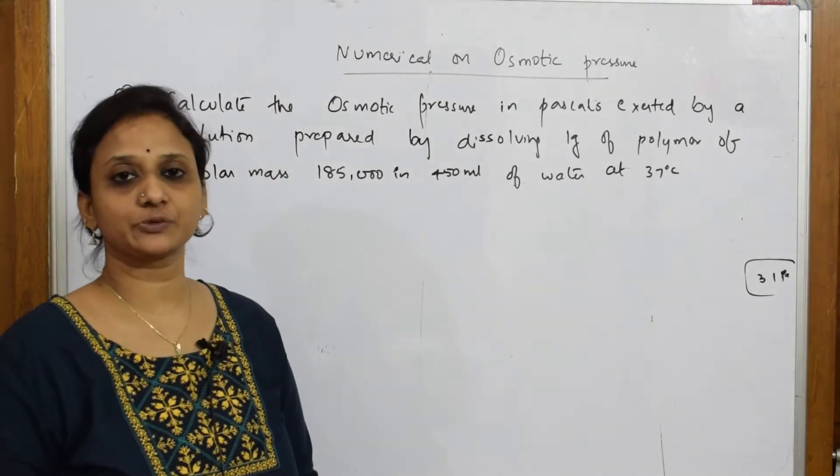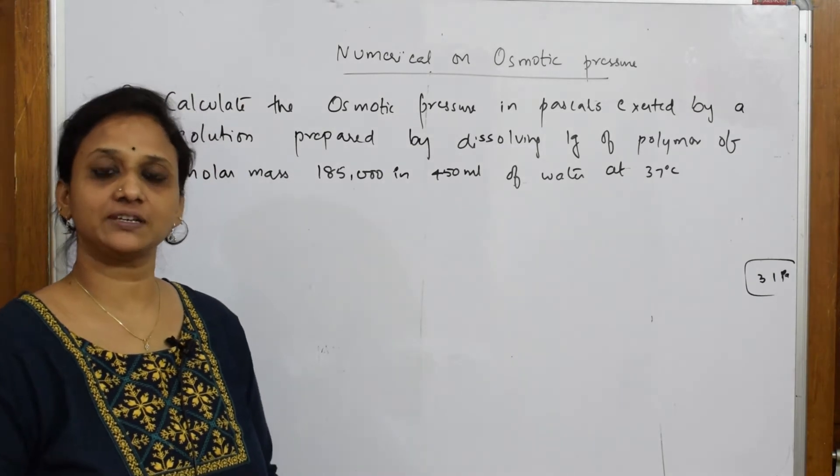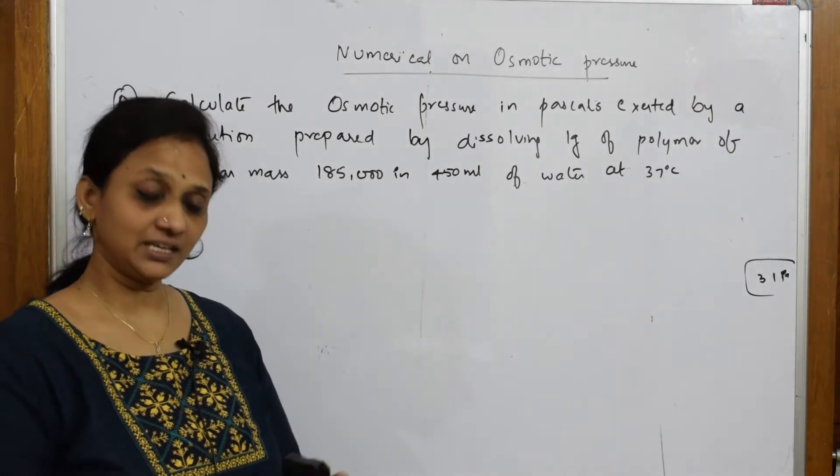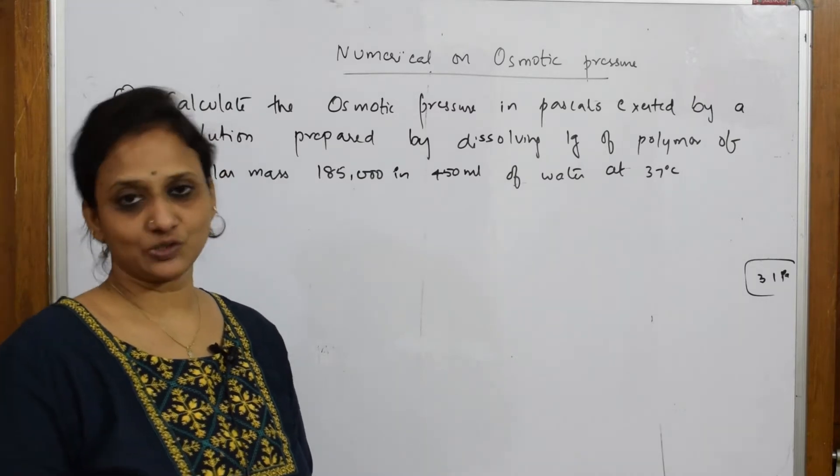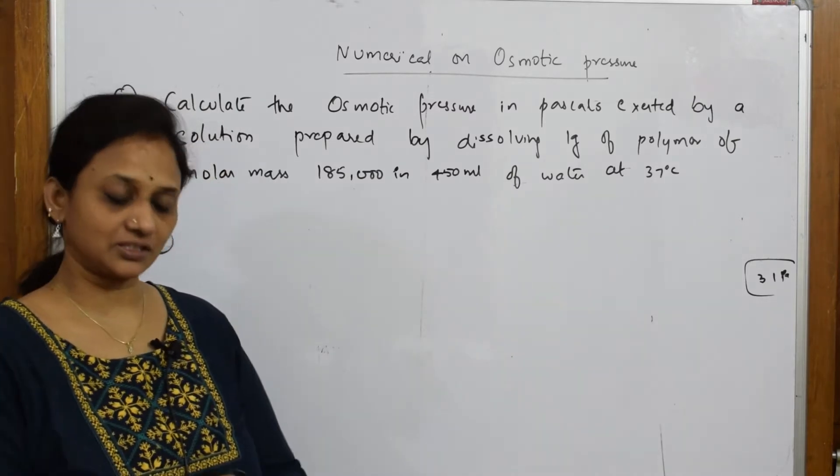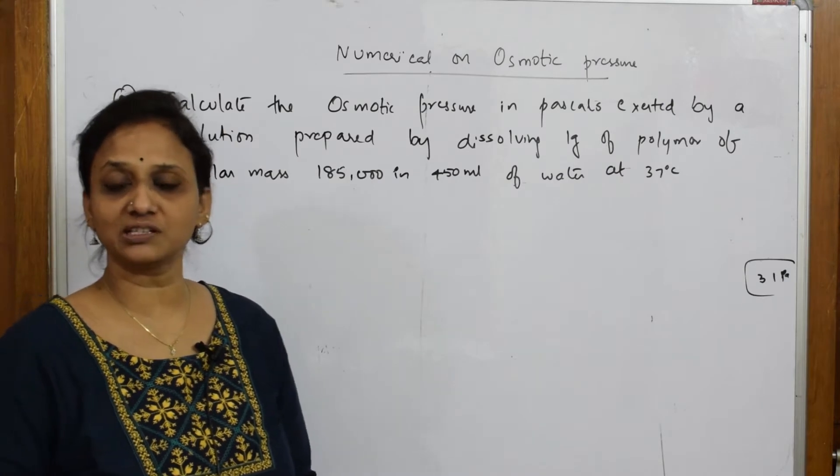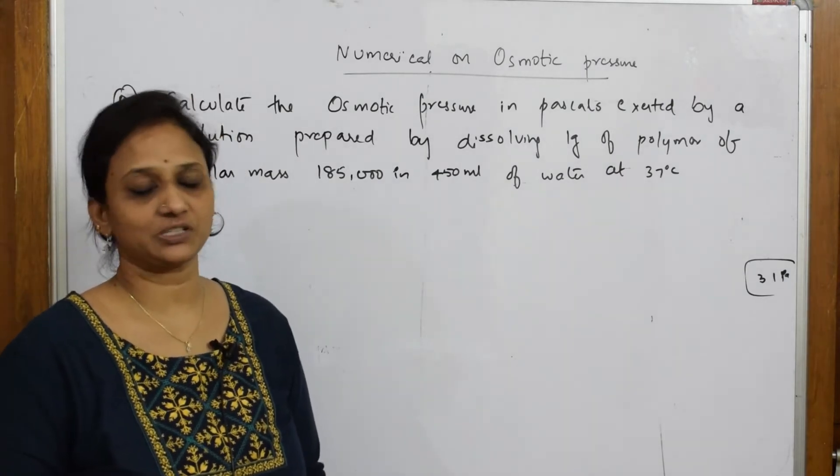So, we have only learnt the concept of osmotic pressure. I already gave the definitions for osmotic pressure. We also derived a formula that is pi equals CRT. We did this and now let us come back and solve the numericals which are related to osmotic pressure.